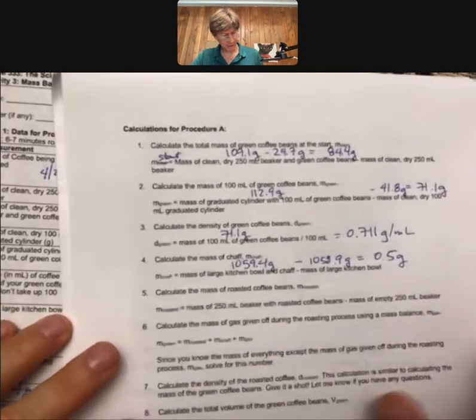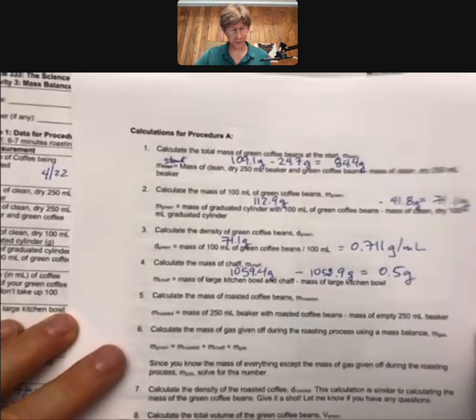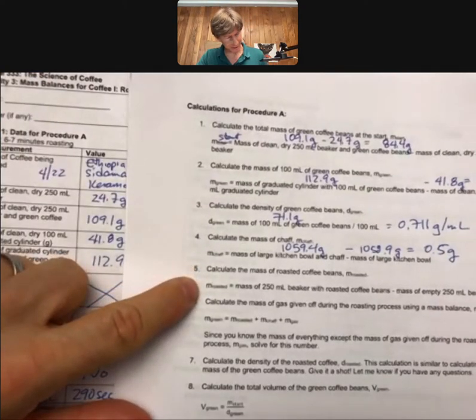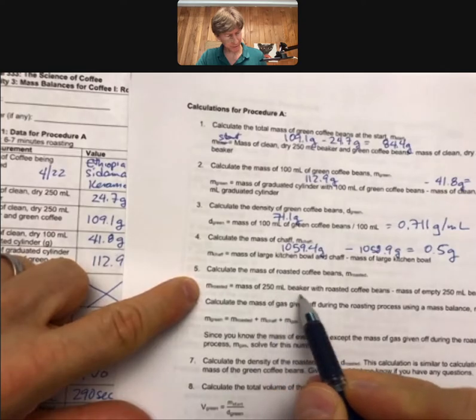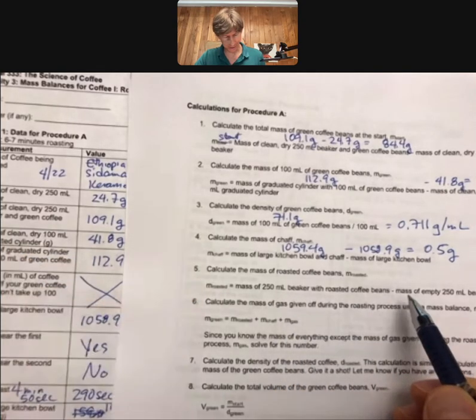Now, let's get back to the mass of my roasted coffee beans. Mass of my roasted coffee beans is going to be mass of the 250 milliliter beaker with the beans, minus the beaker itself.